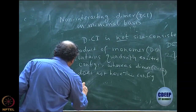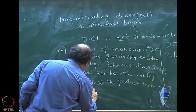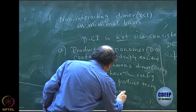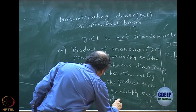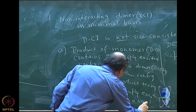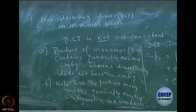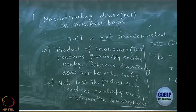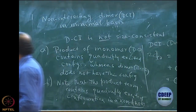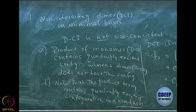Further note that the product term contains the quadruply excited configuration in a non-linear manner — C squared. So the whole spirit of CI will not work. If you want the dimer to have the product term, this product contains the quadruply excited configuration with amplitude C squared. If it is C squared, it cannot be described by CI, because CI describes only configurations mixed in a linear manner.